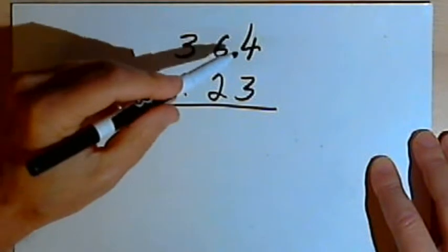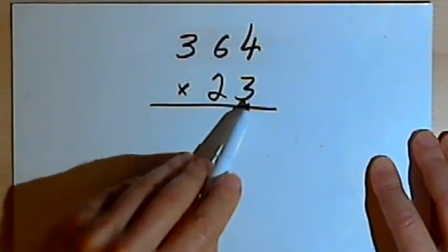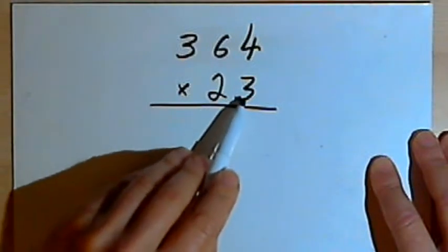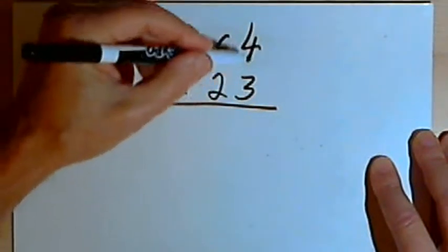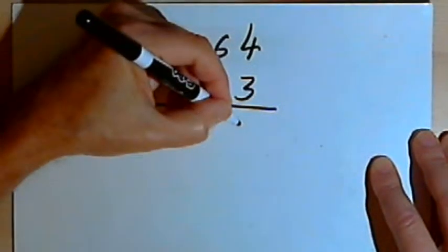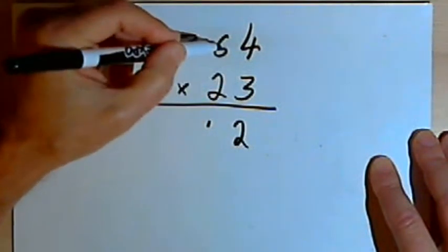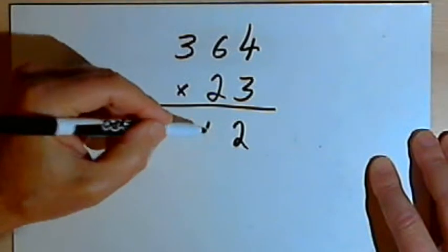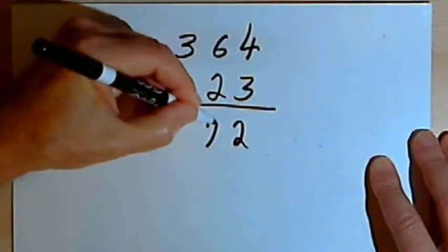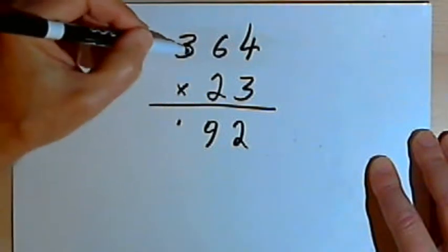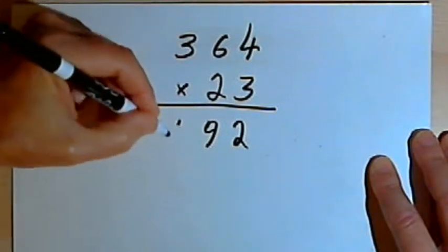I'm going to take the 364 and I'll start out by multiplying by the 3, the unit part of the number 23. So 3 times 4 is 12, I'll write the 2 and carry a 1, 3 times 6 is 18, plus the one that I carried would be 19. So I'll write 9, carry a 1, and then 3 times 3 is 9, plus one more is 10.